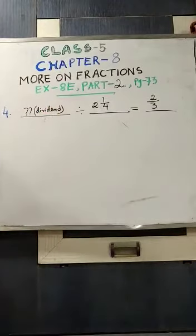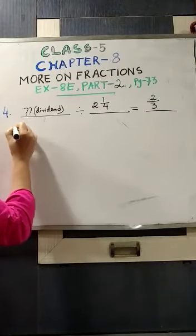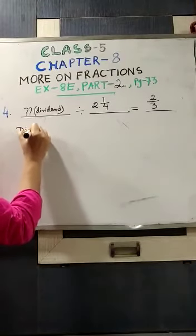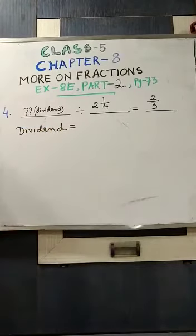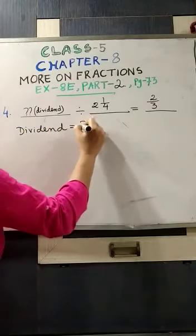Can you remember the formula to find out the dividend? I am making you remember. Dividend is equal to divisor into quotient. Clear? So here the divisor is given and the quotient is given. We have to multiply these 2 fractions.